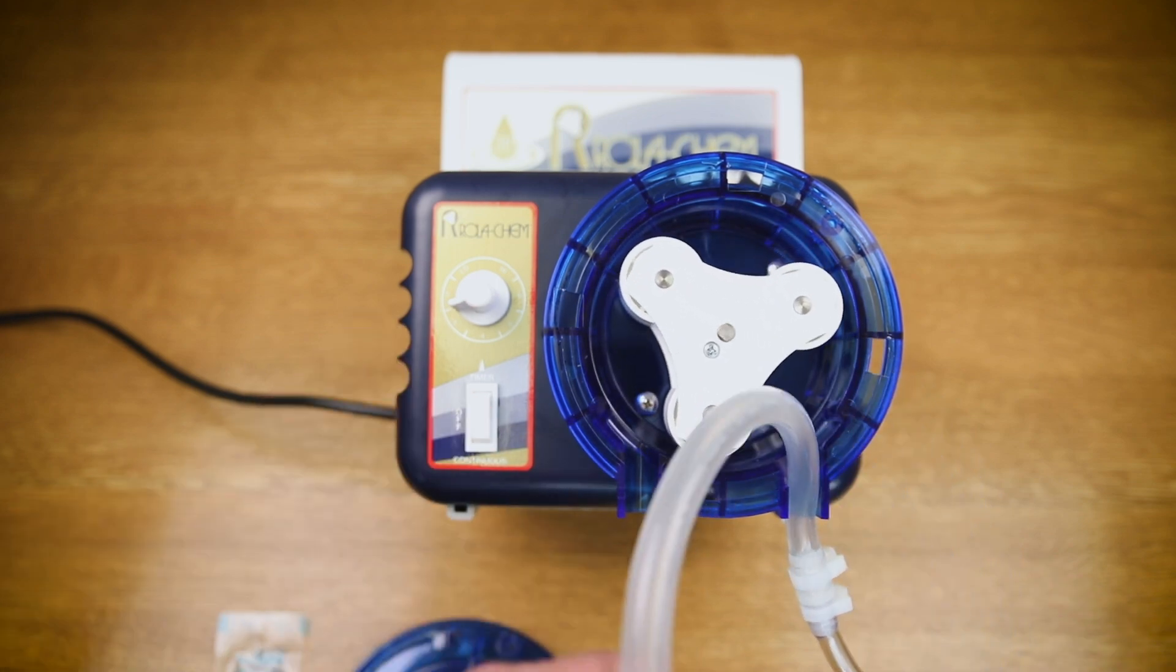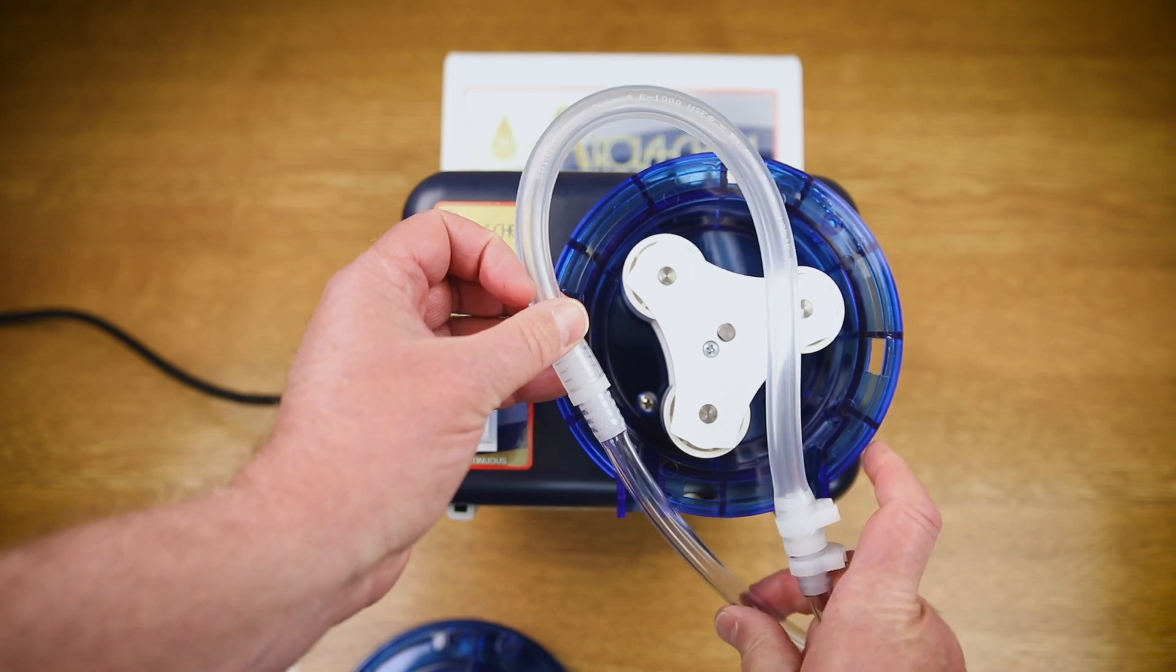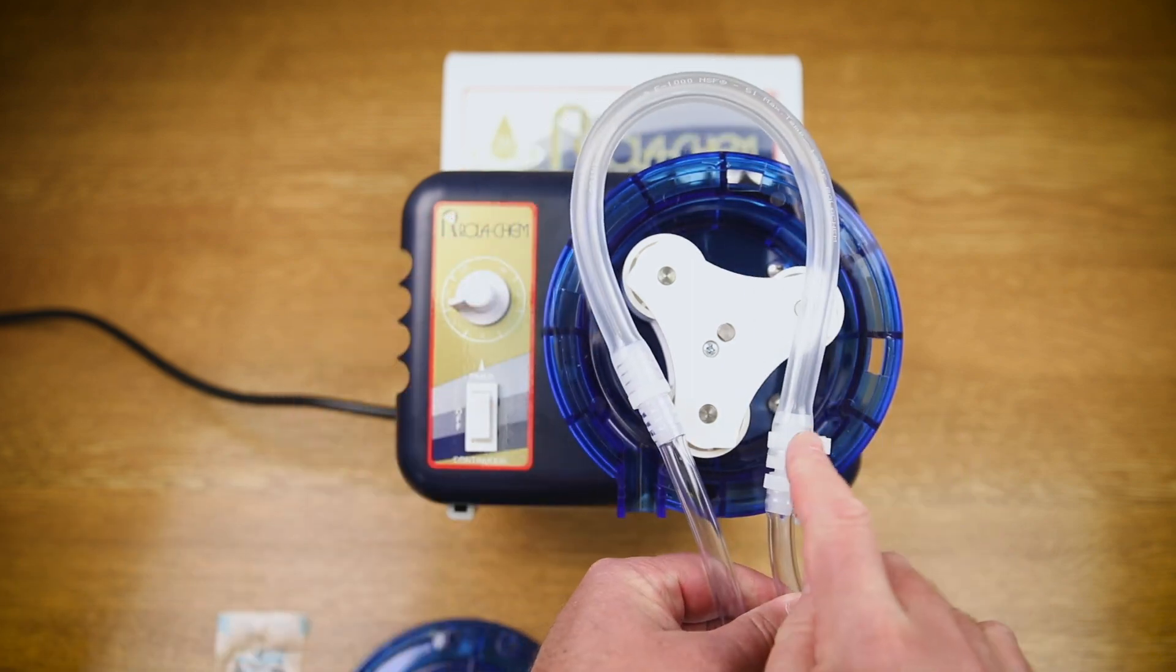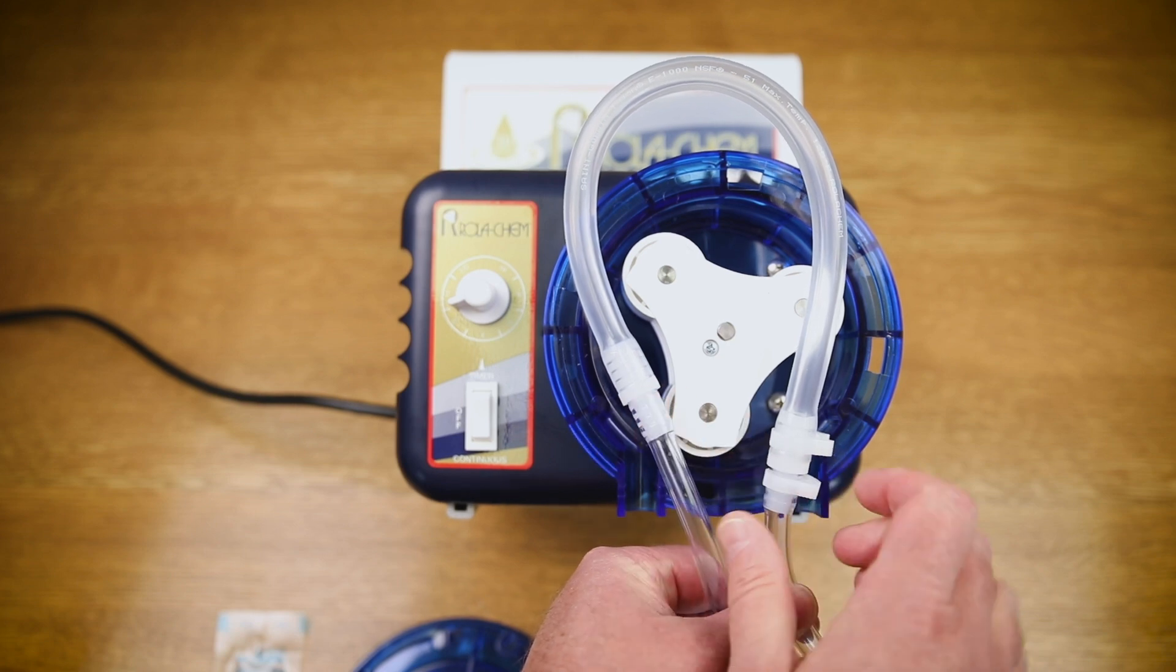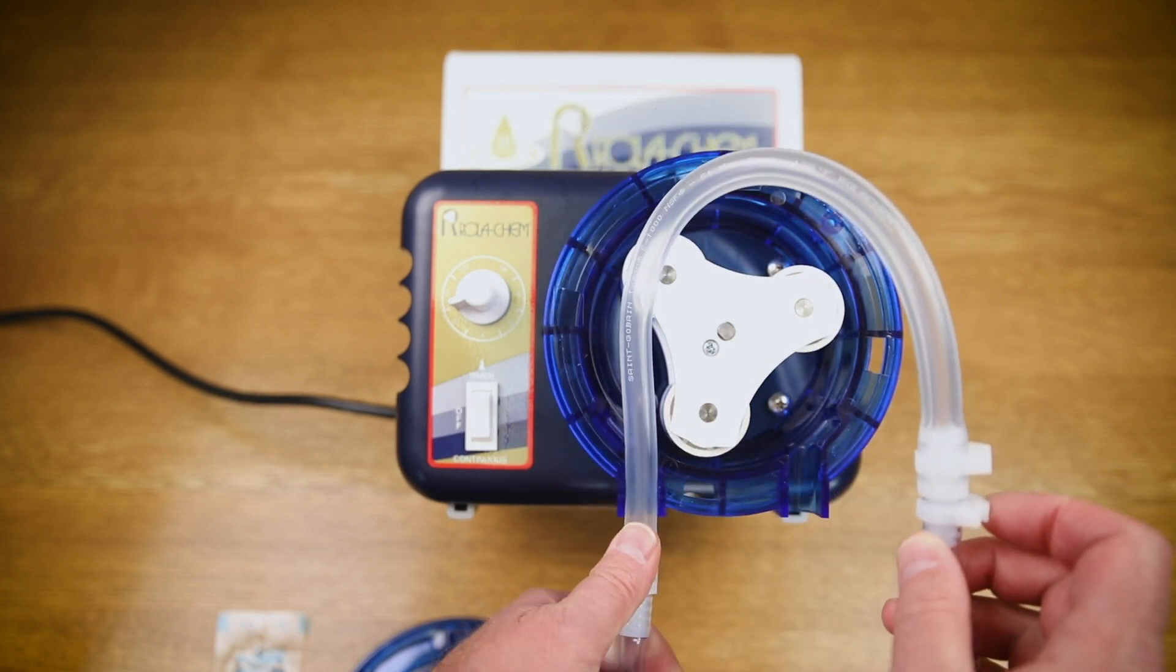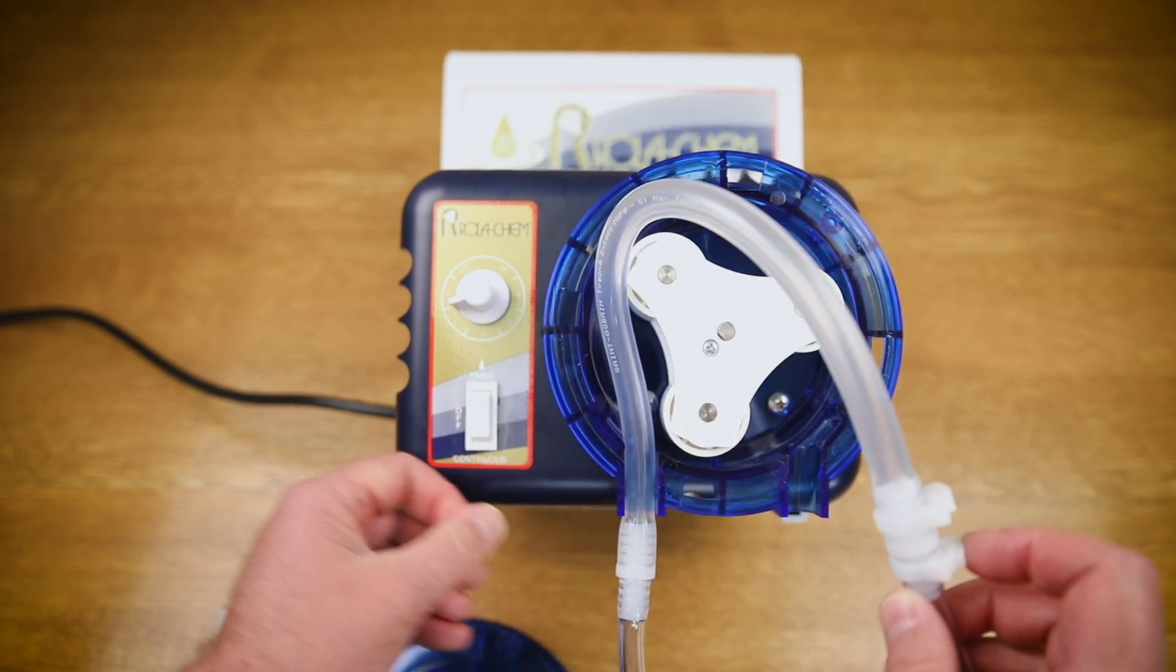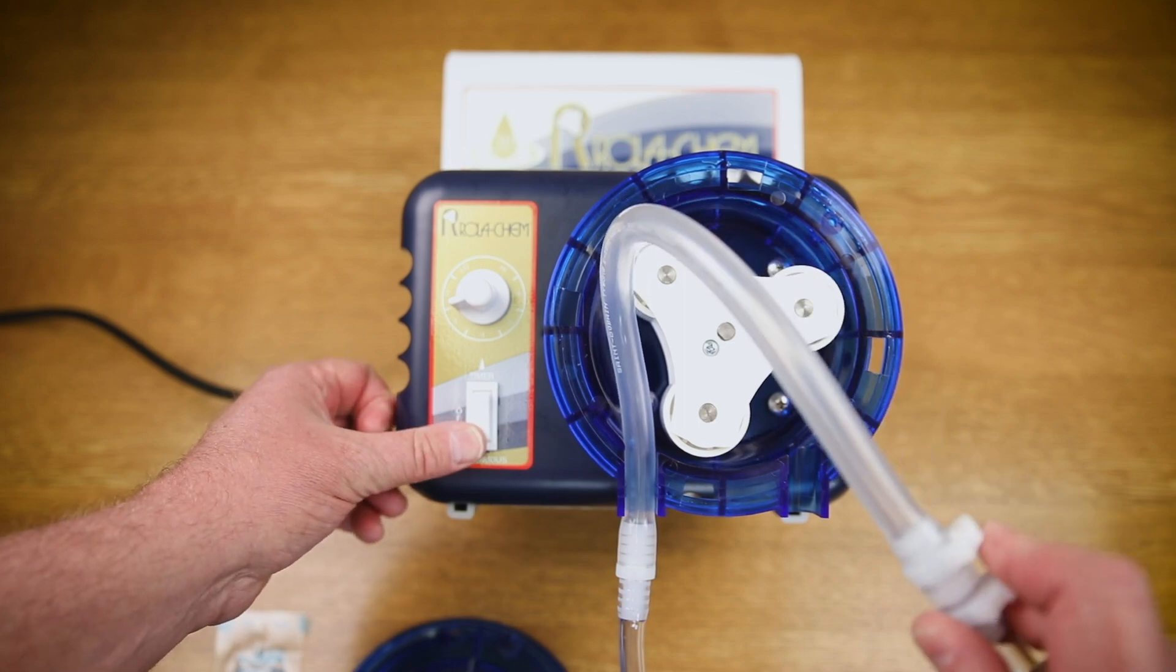Note that the pinch tube assembly has two ends, one with the hose clamp and one without. The side that does not have the hose clamp will go on the left side of the feeder and can be fed through by either moving the roller assembly manually or jogging it with the timer switch.